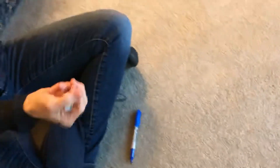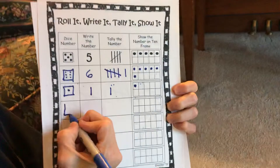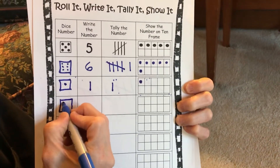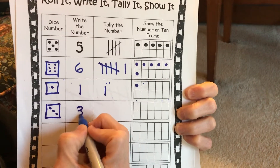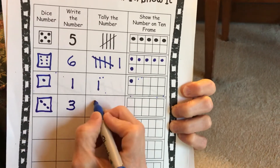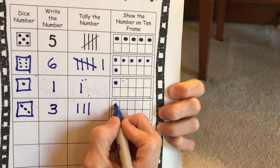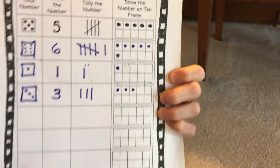Let's try another one. We already did six, so I'm going to roll again. We have the number three. Our spots go in a diagonal: one, two, three. Write the number three. One, two, three tally marks, and one, two, three on our ten frame.